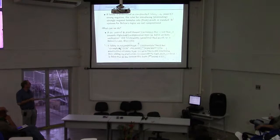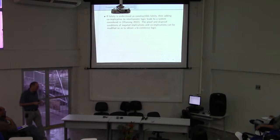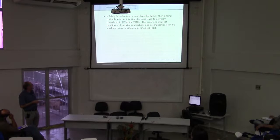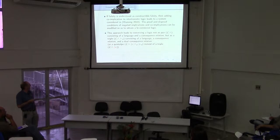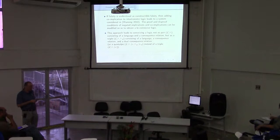If falsity is understood as constructible falsity, then adding co-implication to intuitionistic logic leads to a different system considered elsewhere, and we can also modify the falsity conditions for implications and co-implications to obtain bi-connective logic. Moreover, this line of thought leads one to conceive a logic not as a pair of a language and a consequence relation, but at least as a triple consisting of a language, a consequence relation, and a dual consequence relation — or as a quintuple consisting of a language, a consequence relation, a dual consequence relation, an entailment, and a dual entailment relation. This broader conception of logic allows one to have a compositional semantics for both constructive implication and co-implication.